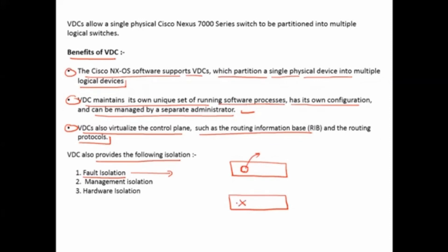For example, if OSPF hangs on one switch, it doesn't mean OSPF will hang on the other switch — this is fault isolation. Management isolation means each VDC has its own management IP for independent access. Hardware isolation means individual sets of ports are allocated to individual VDCs, and no port is shared between VDCs.